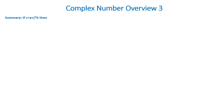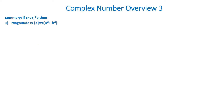In summary, if we have c equal to a plus jb, then the magnitude of c is equal to the square root of quantity a squared plus b squared. And the angle of c is equal to the inverse tan of b divided by a.